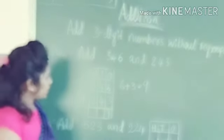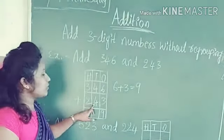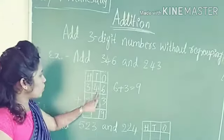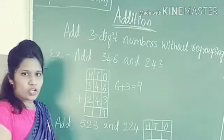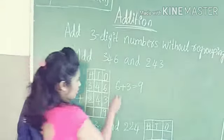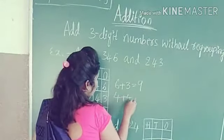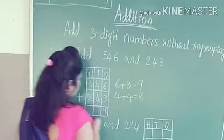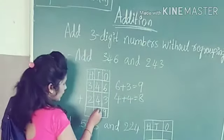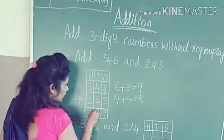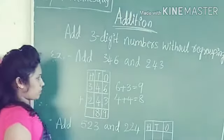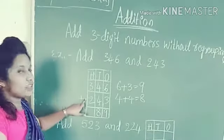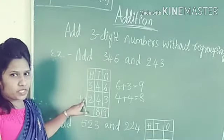Then we add the numbers at the tens place. 4 plus 4 — how much? 4 plus 4 is 8. So I write 8 at the tens place.